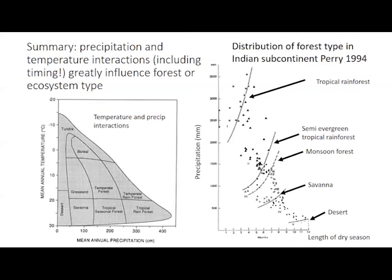You can move your way down this graph and see how forest type changes to things like semi-evergreen tropical rainforest, monsoon forests specific to that part of the world, and then gradually transitioning out of things you might recognize as forests into savannas, mixed grasslands and trees, and then into deserts — ecosystems that are certainly not dominated by trees.